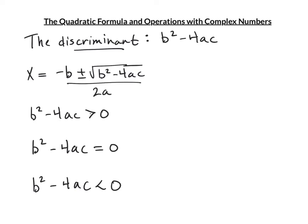The discriminant is b² - 4ac — it's the part of the quadratic formula under the square root. It tells you the number and type of solutions. If b² - 4ac > 0, you get two real solutions. If b² - 4ac = 0, you take the square root of 0, add and subtract 0 to -b/(2a), giving one real solution.